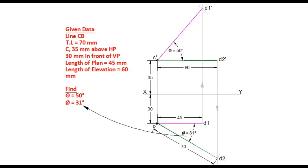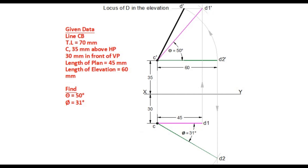Now draw a locus of D in the elevation through D1 dash. With point C dash as center and C dash to D2 dash as radius, cut an arc on the locus of elevation. This point is D dash. Line C dash D dash is the elevation of the line CD. Draw a locus of D in the plan through D2. With point C as center and C to D1 as radius, cut an arc on the locus of plan. This point is D. Line CD is the plan of the actual line CD.